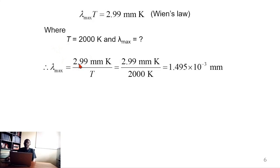That gives 2.99 millimeter Kelvin divided by the temperature. We substitute the temperature and we evaluate. And it gives us 1.495 times 10⁻³ millimeter.